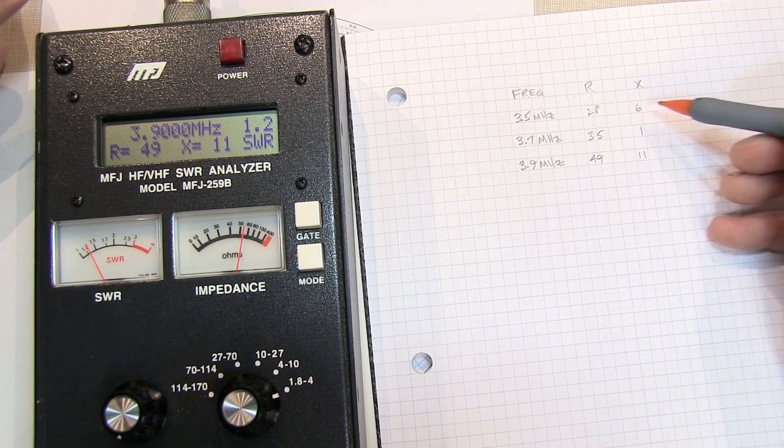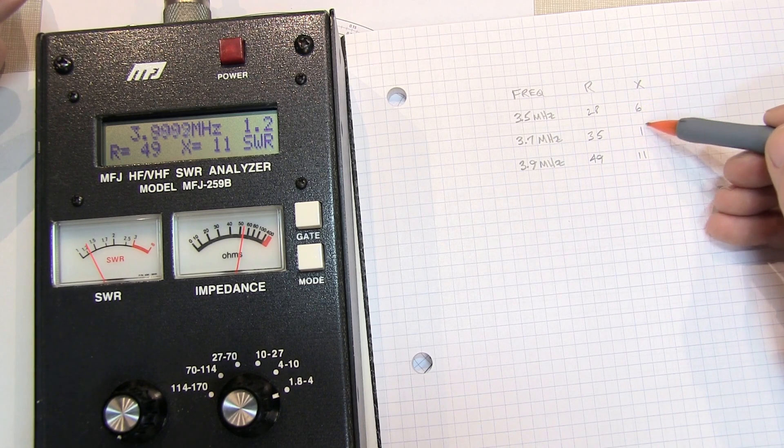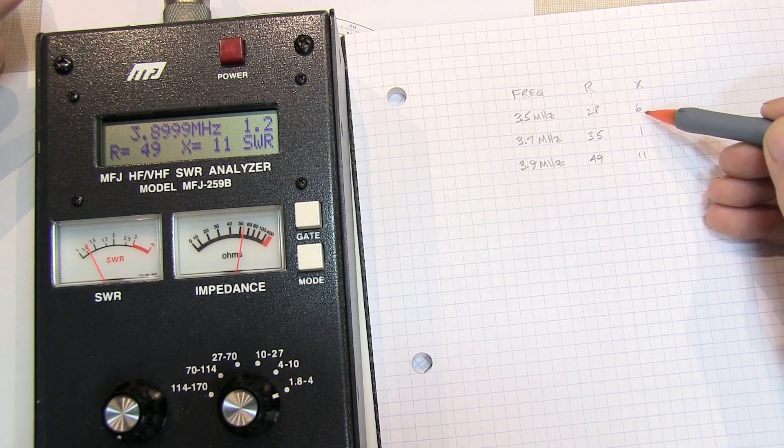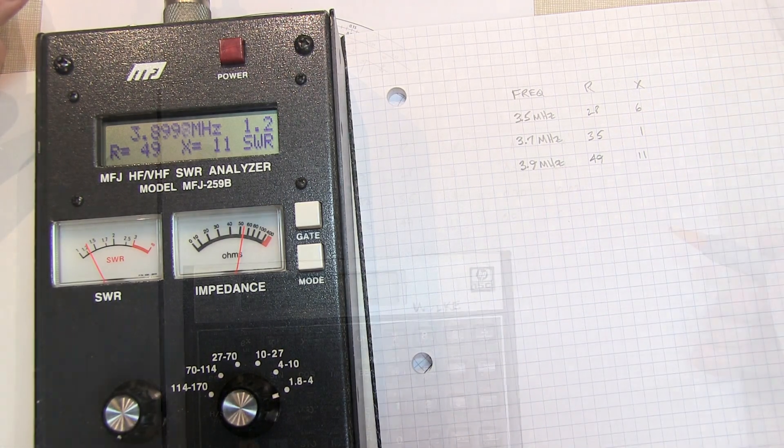So when you're taking your measurements, you want to pay careful attention to if between some of your values we actually cross through a lower value and then come back up again. That may be your indication that you've changed polarity from one end to the other.